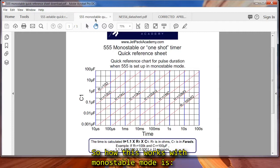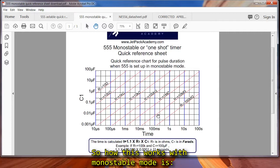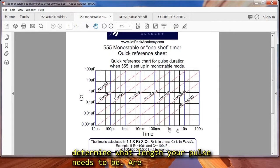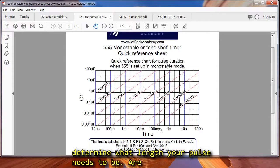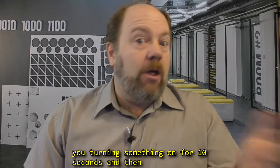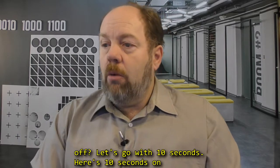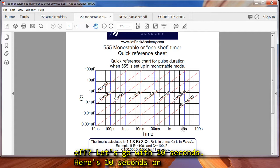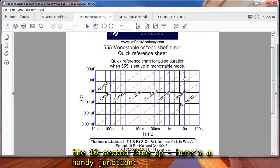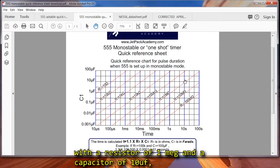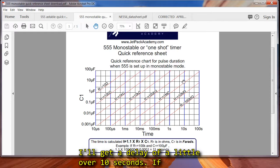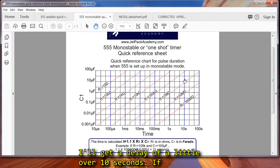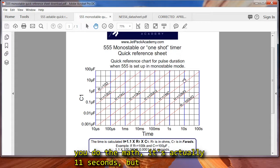So how this works with monostable mode is determine what length your pulse needs to be. Are you turning something on for 10 seconds and then off? Let's go with 10 seconds. So here's the 10 seconds on the chart. Just to keep it simple, I'll follow the 10 second line up. Here's a handy junction. With a resistor of 1 megaohm and a capacitor of 10 microfarads, I'll get a delay of just a little over 10 seconds. Now if you do the math, it's actually 11 seconds, but we're in the ballpark.